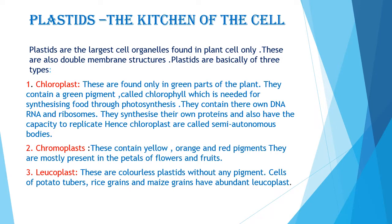Chromoplasts are mostly present in the petals of flowers and fruits. Leucoplasts are colorless plastids without any pigment — they don't have any pigment in them. Cells of potato tubers, rice grains, and maize grains have abundant leucoplasts.